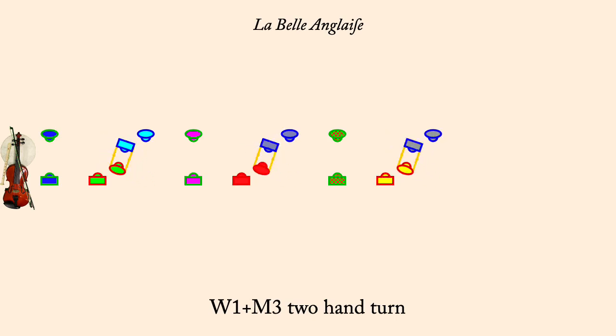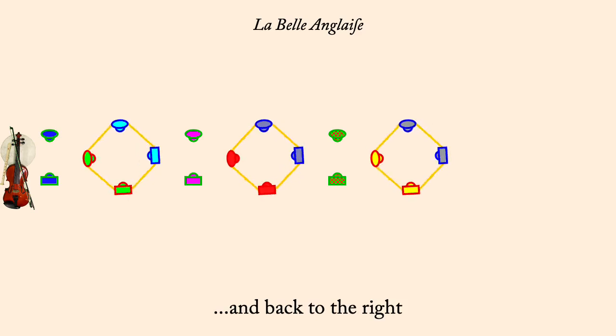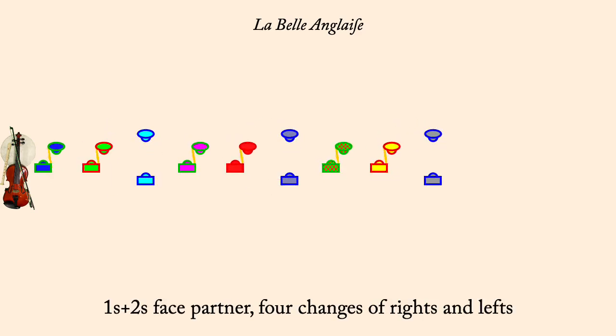Ones and threes circle left. And back to the right. Ones and twos, four changes of rights and lefts.